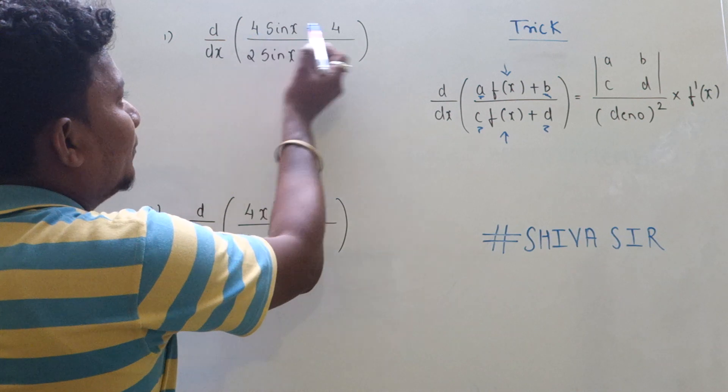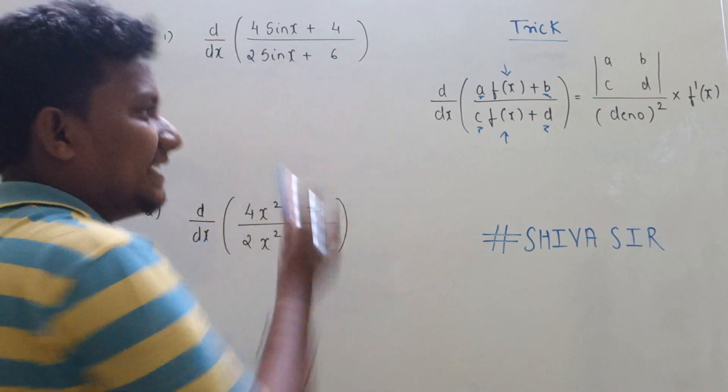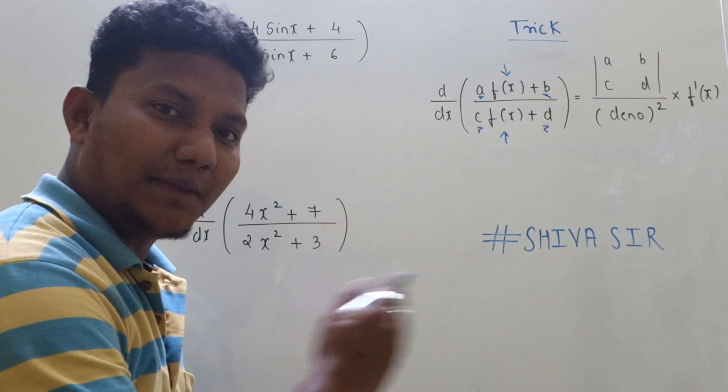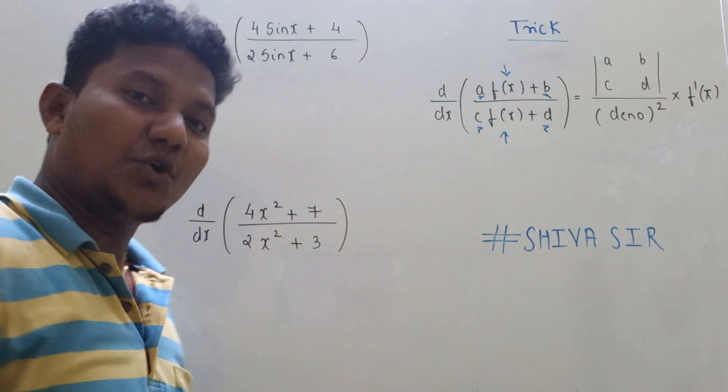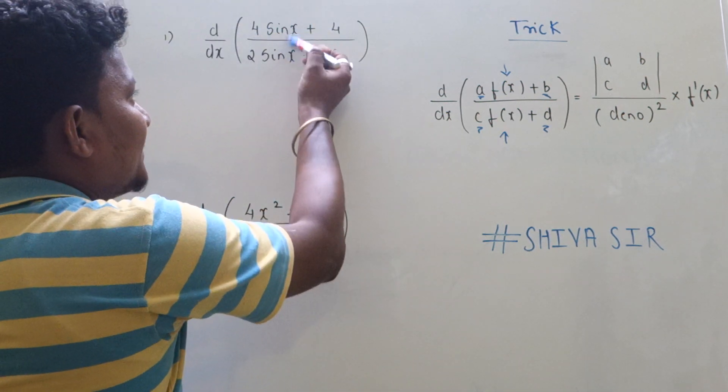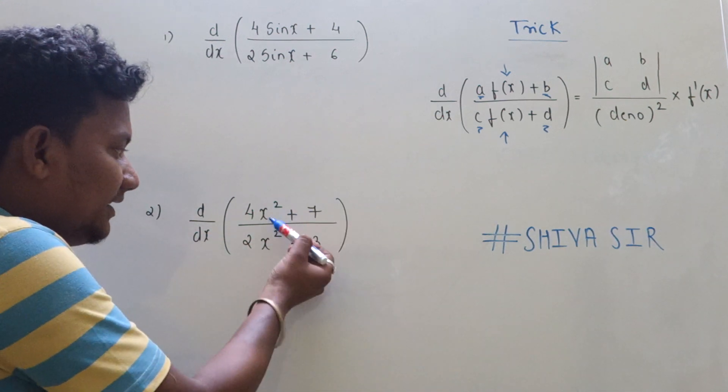Focus on the example. Can I say 4, 4, 2, 6 acts as a, b, c, d? Where 4, 4, 2, 6 are constants, and here f(x) is the same. I can see here f(x) is the same.